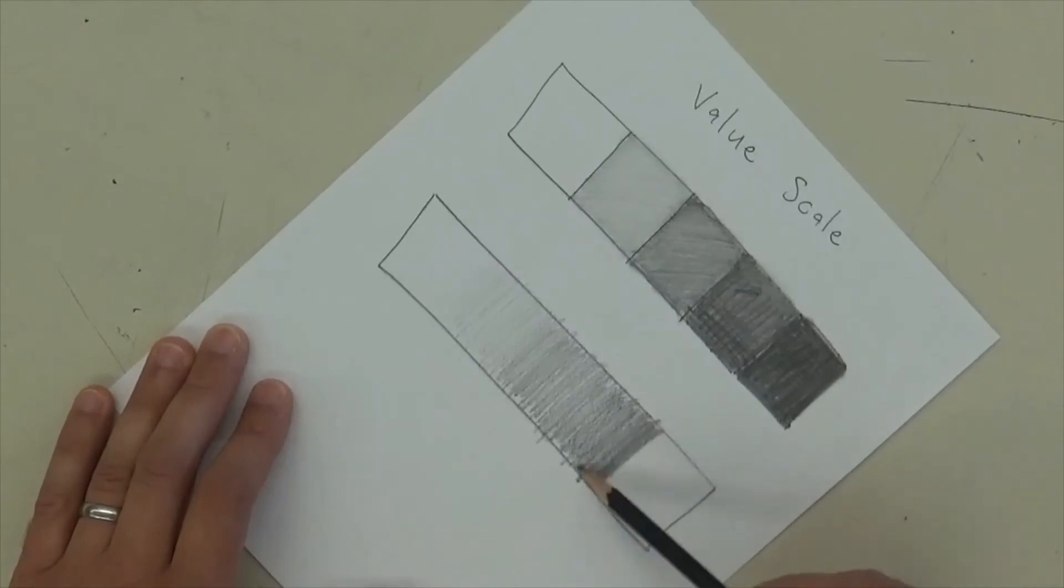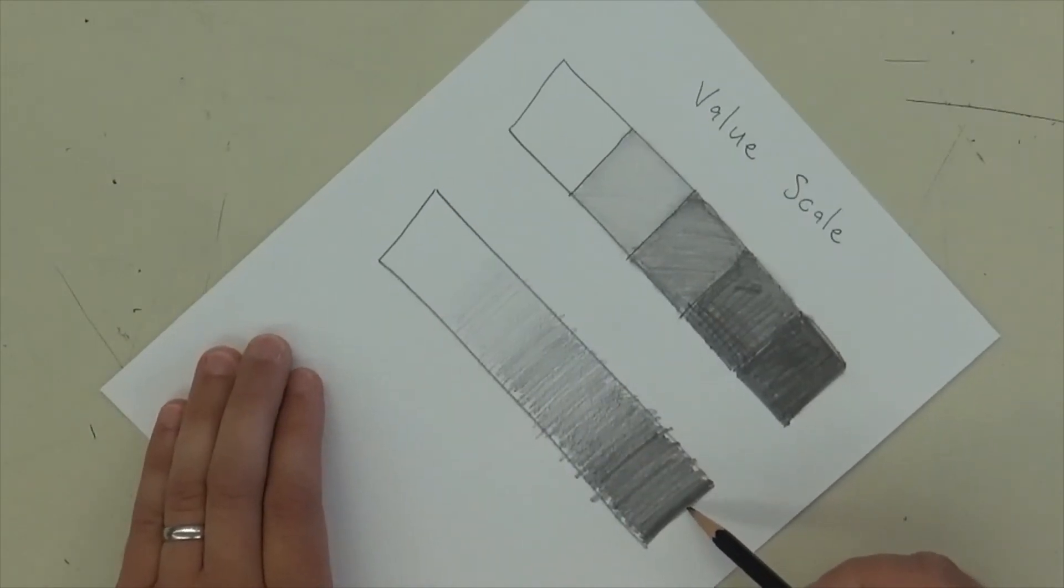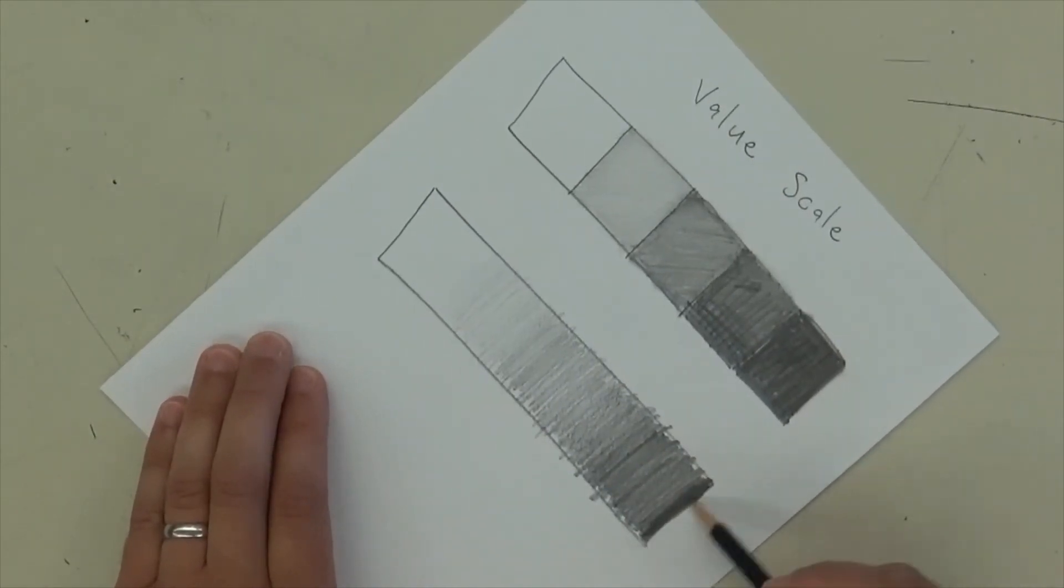And now I'm in the dark region. So I want to be pushing down a lot harder with my pencil here. But I still don't want any lines to show. So this is the second one you should do. It's a little bit trickier. And do your best to stay inside. And then once you get all the way to the end, you hit this wall, that's when you should be pushing down as hard as you can.